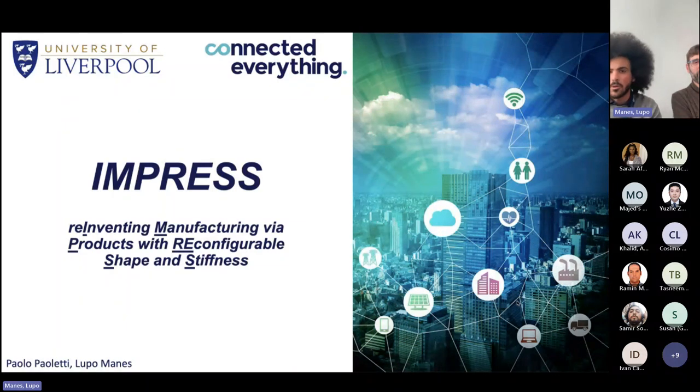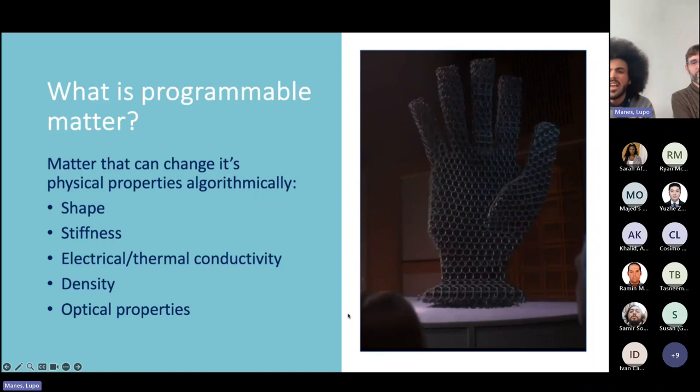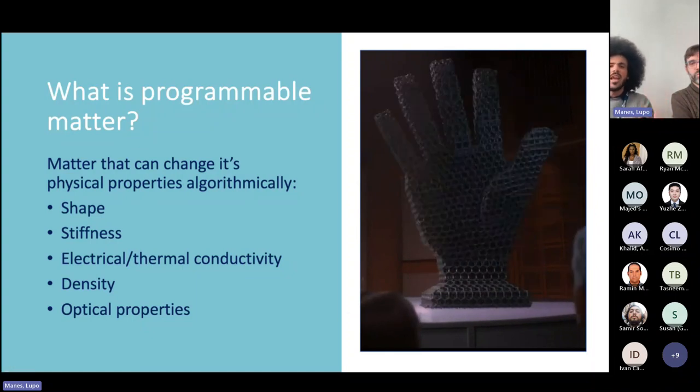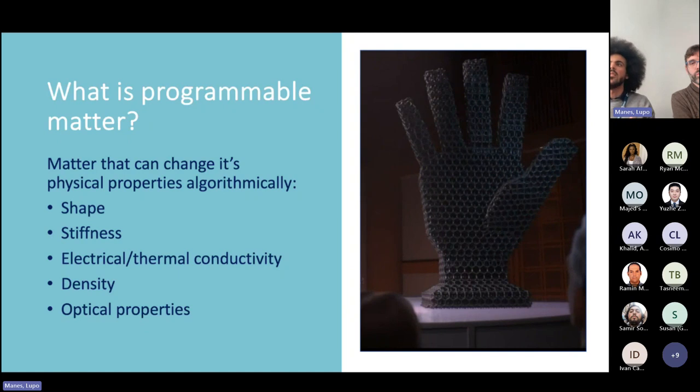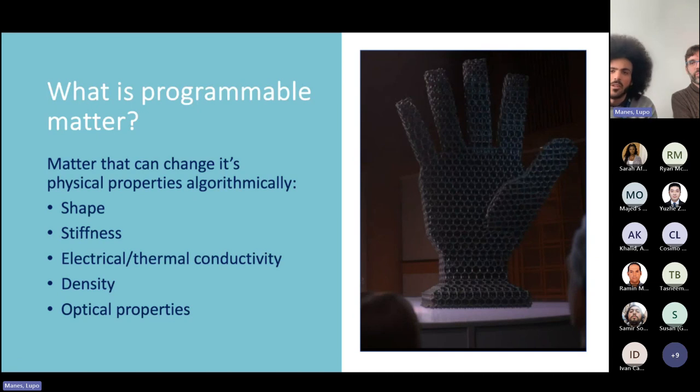Basically, our goal is to create programmable matter, which is kind of a sci-fi and intimidating world, but it's just any material, any physical object that we can control the physical property of algorithmically. For example, here on the right you see the microbots from Big Hero 6, which is the most commonly used example.